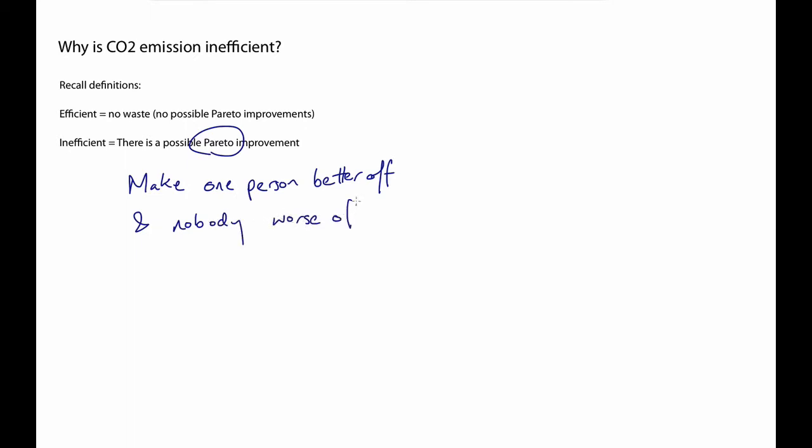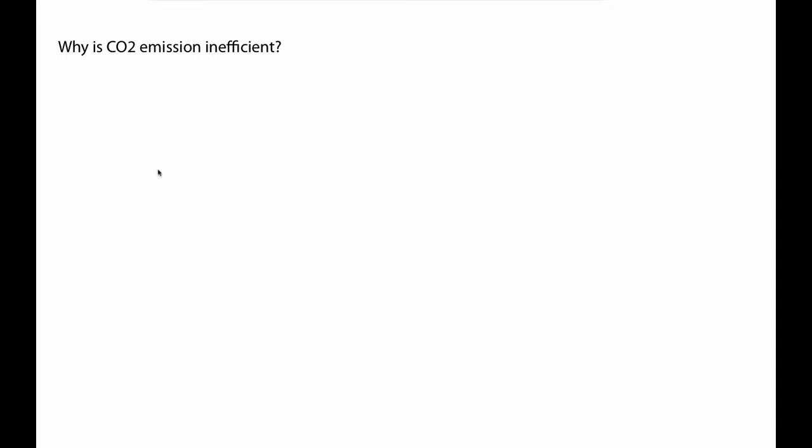So there's a sense in which Pareto improvement is an unqualified good. It's good for at least one person, and it's bad for nobody. So when we say that the emission of carbon dioxide is inefficient, we're simply saying that practice could be changed, making at least one person better off without making anyone worse off.